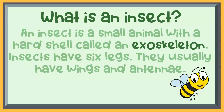An insect is a small animal with a hard shell called an exoskeleton. Insects have six legs. They usually have wings and antennae.